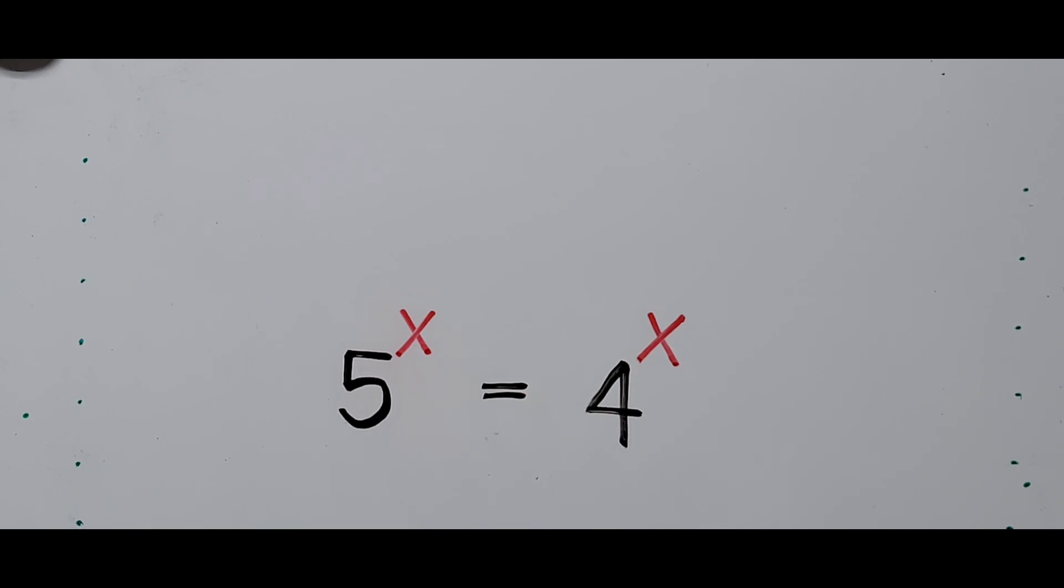Right away we can find the value of X by just looking at it. 5 to the power X equals 4 to the power X - how could this be? This is 5, this is 4, but they have the same exponent. The answer is really simple: the value of X is 0. X here is 0.